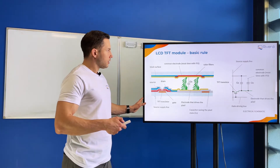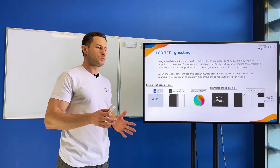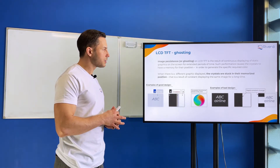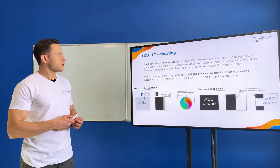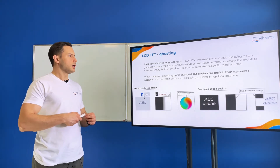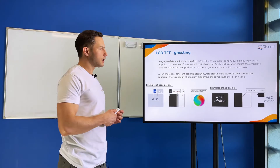Once we have a display working, it's not only important to show the screen, but in our university we learn practical things — one of them is LCD TFT ghosting. We know how to create the image, but what happens when we have an image on the screen for a long time, and how do we prevent it? We have something called LCD ghosting — we don't see it very often, but in some displays this phenomenon still exists.